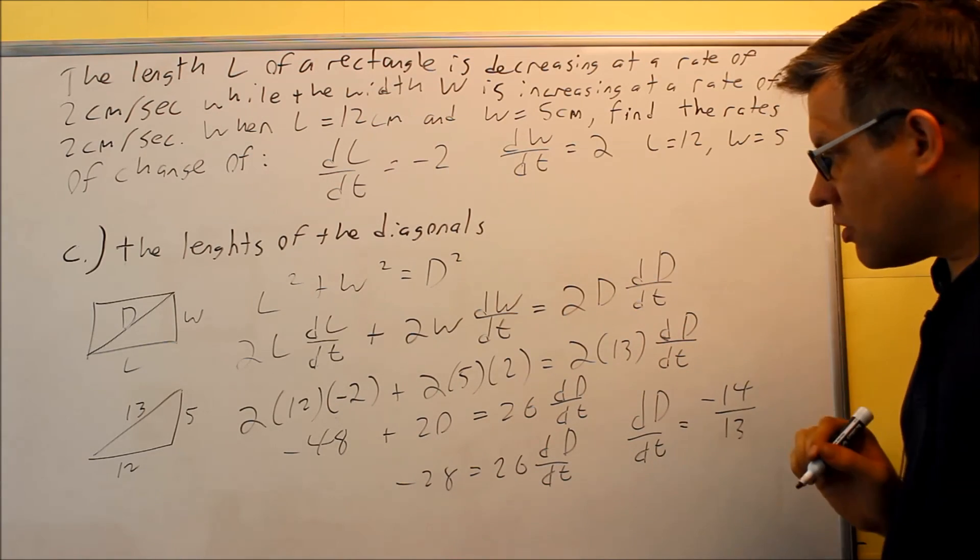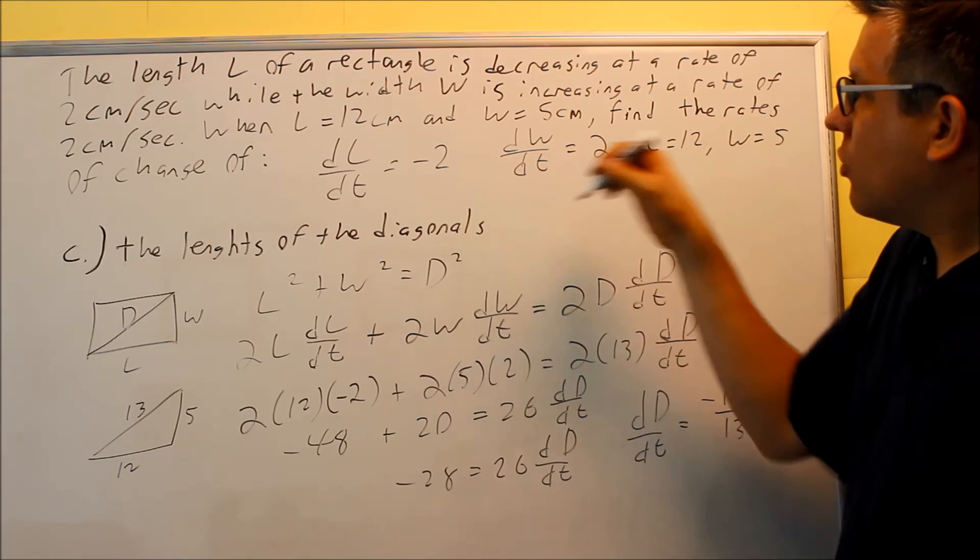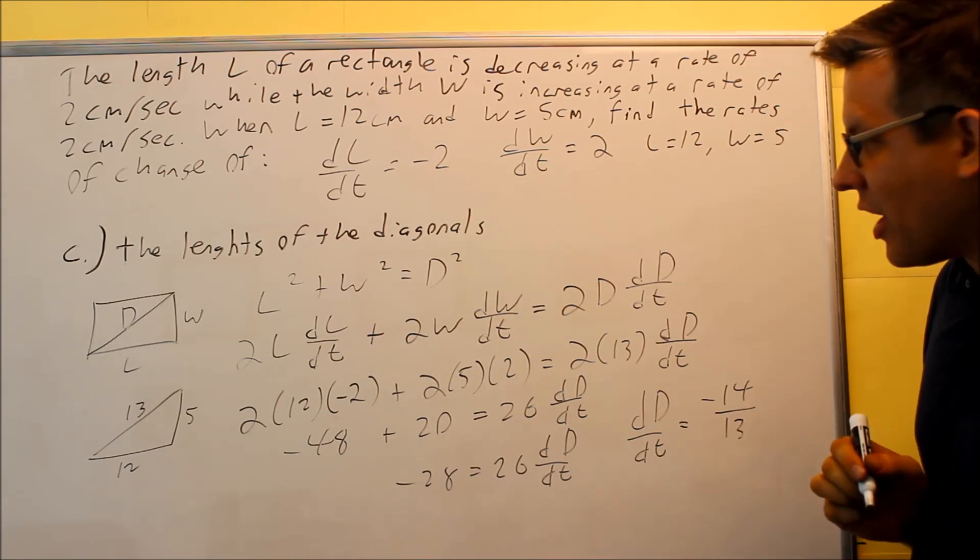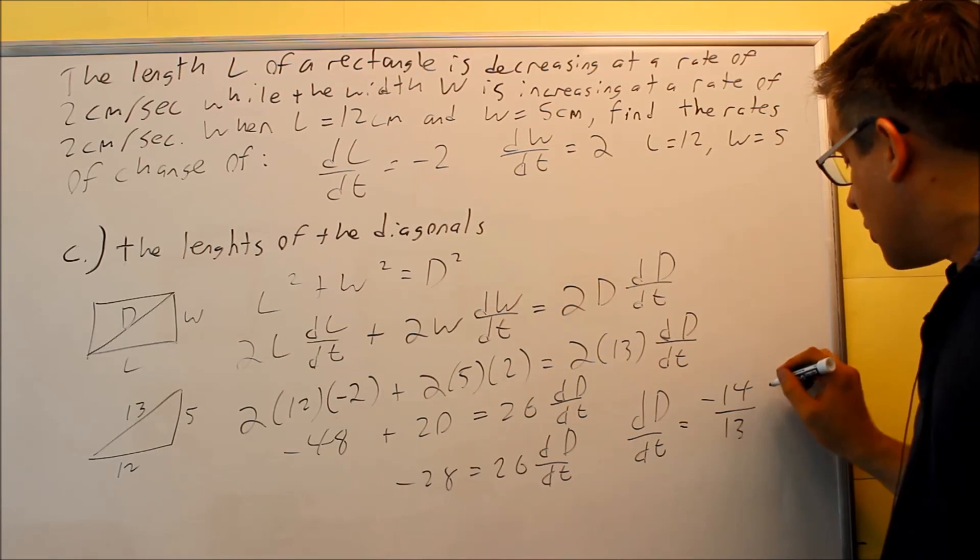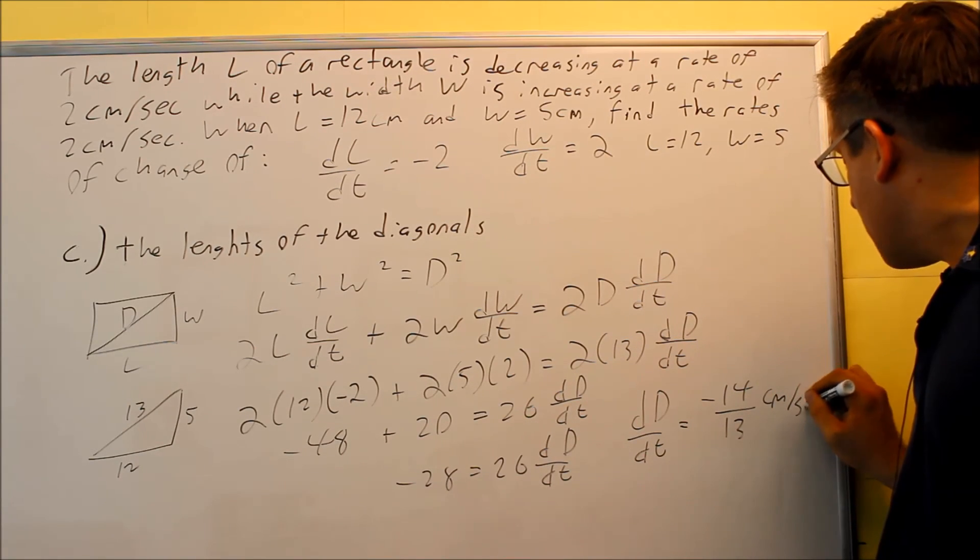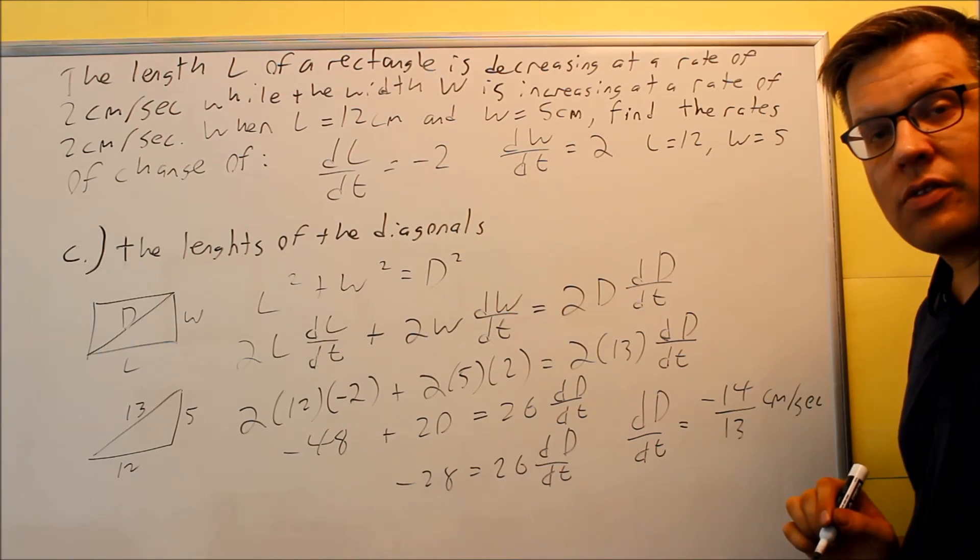What's going to be the units on this? Well, if the length and width are changing in terms of centimeters per second, which they are, that means the diagonal is going to be changing also. So this would be in terms of centimeters per second as well, so negative 14 thirteenths.